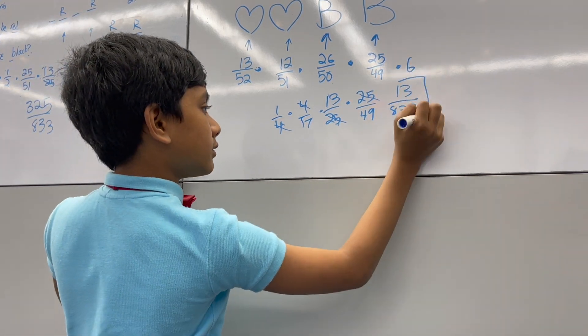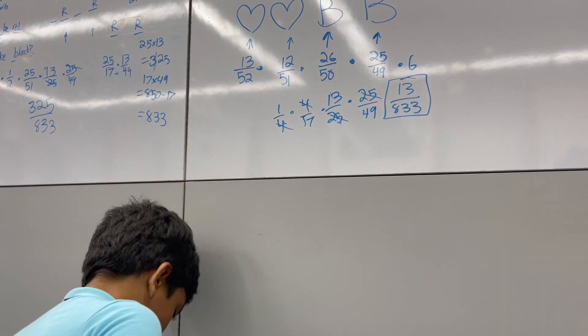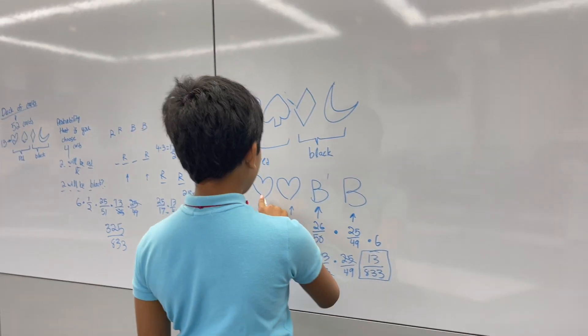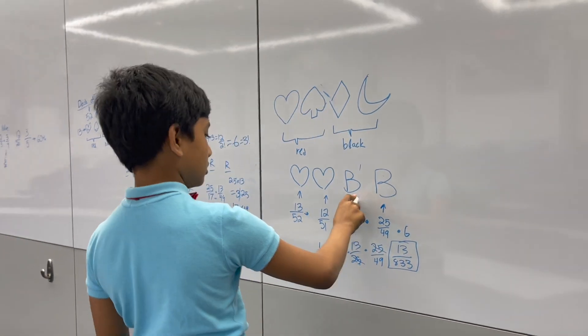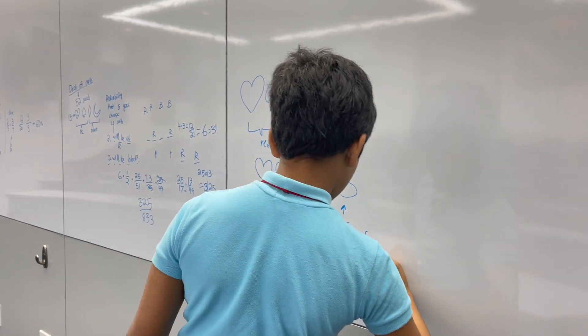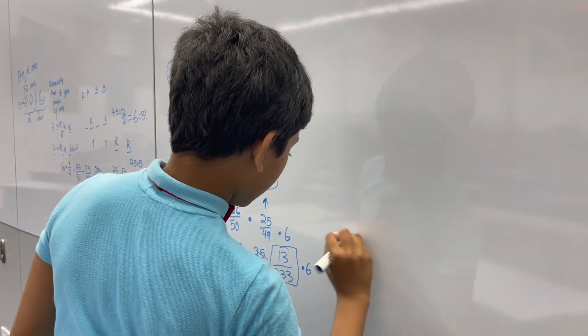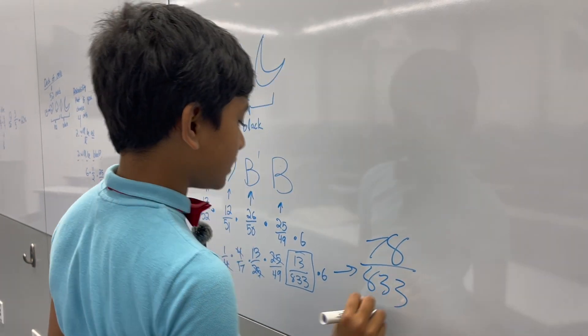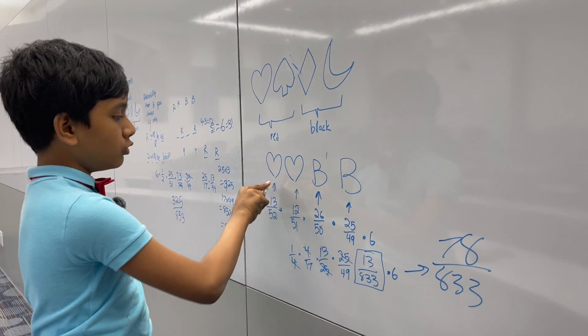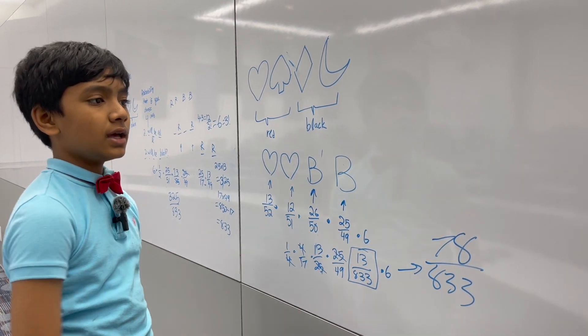So, there is a 13 out of... You pick 2 hearts. Oh, I forgot to multiply by 6. That makes a 78 out of 833 chance. That you pick 2 hearts and then 2 blacks.